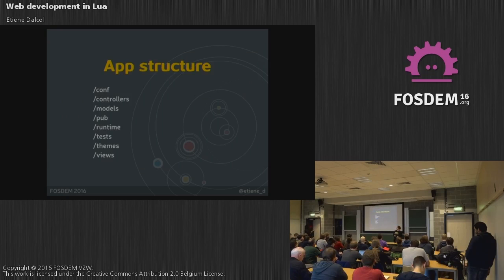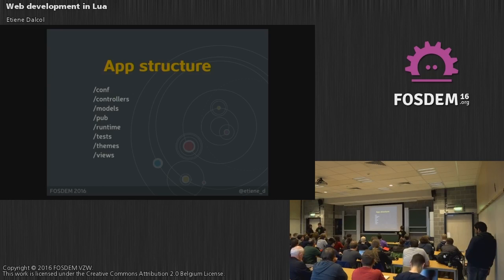This is the structure your app will have. You have a place for configuration, controllers, models, public stuff, things created at runtime, tests, themes, and views.